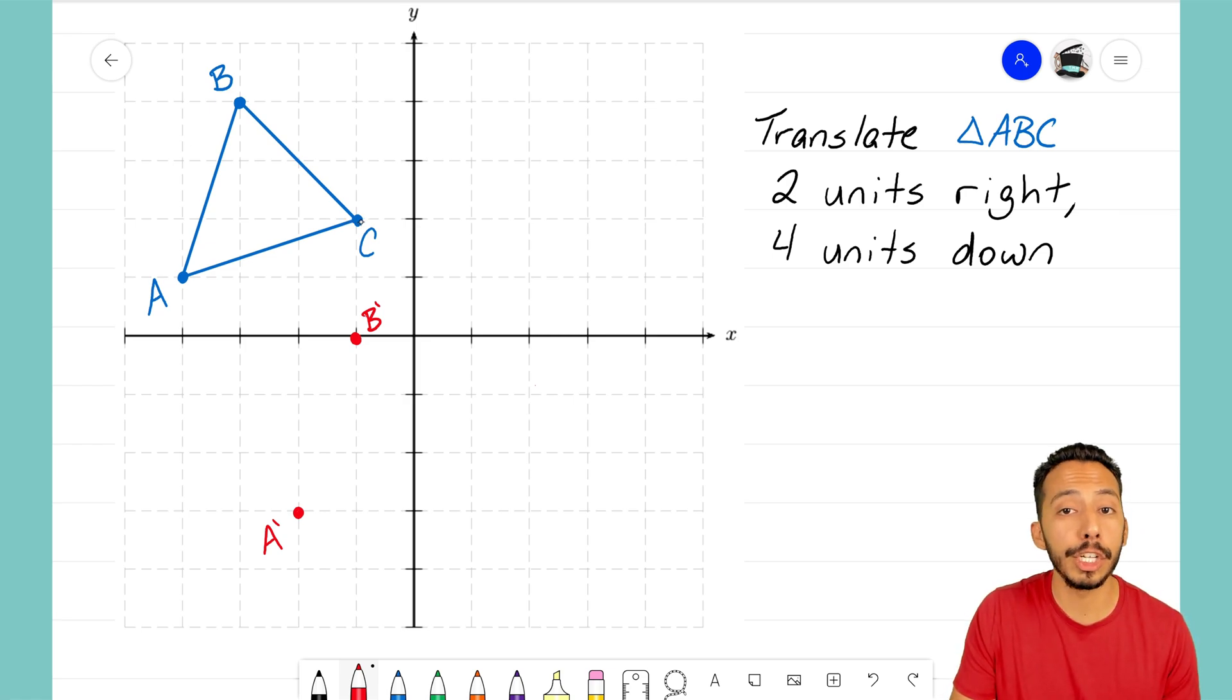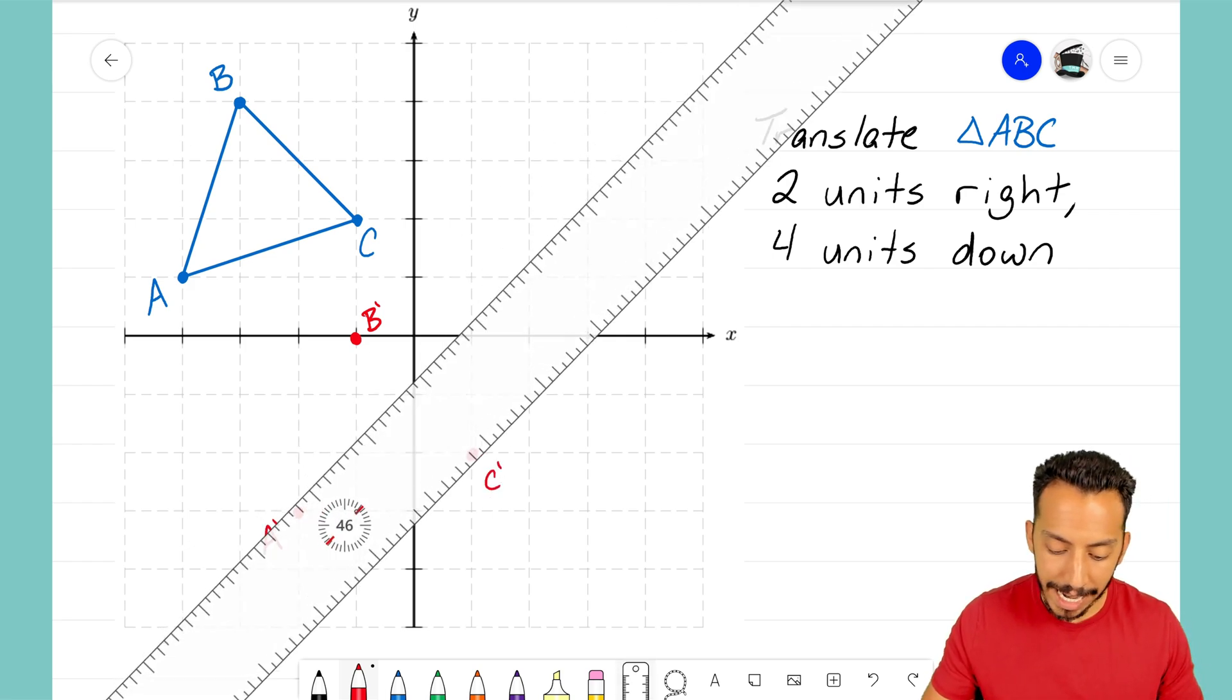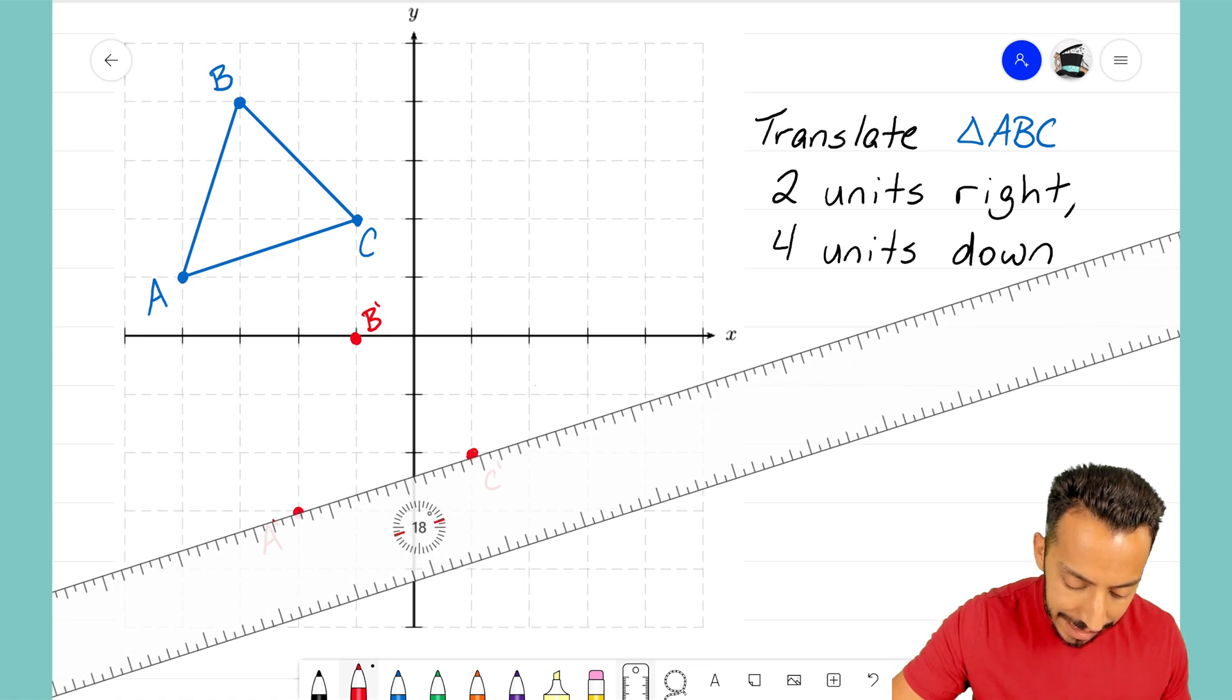Now we have one more point to go and that's point C. Again, two units to the right, one, two, four units down, one, two, three, four. I mark that point, I label it C prime.